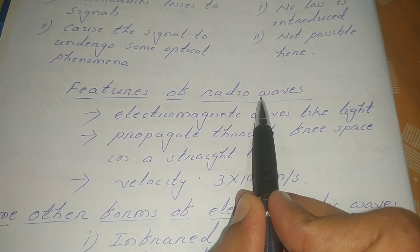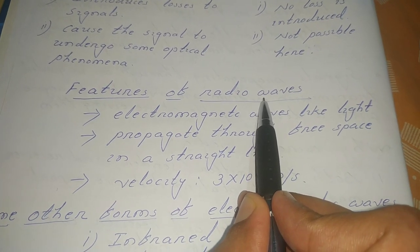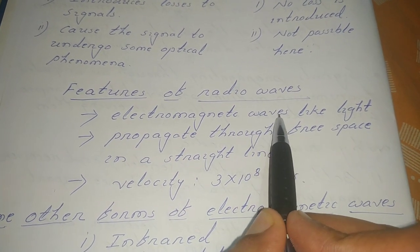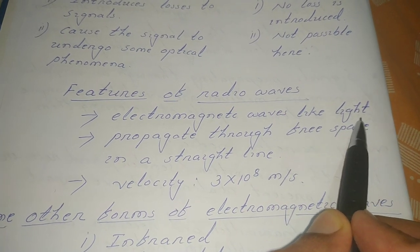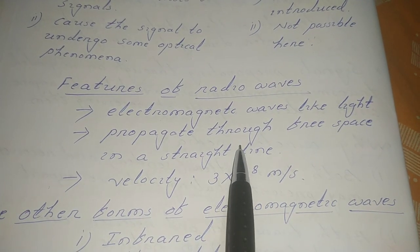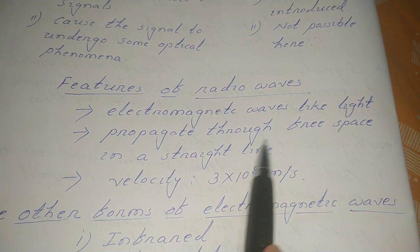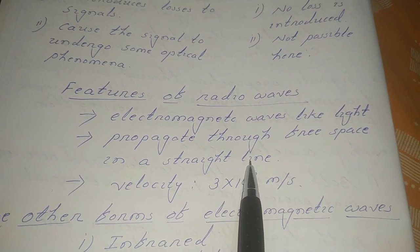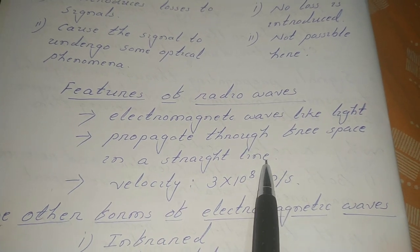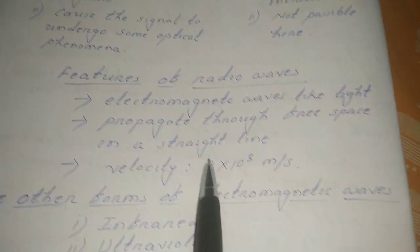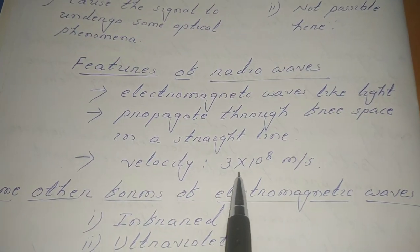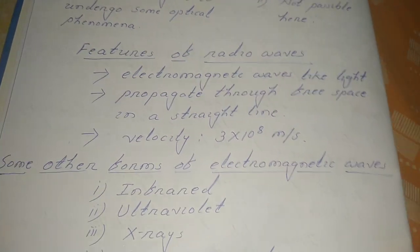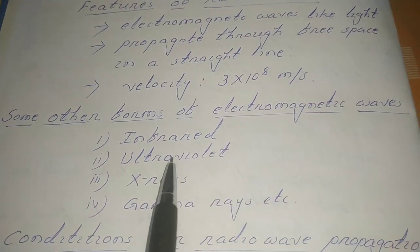Radio wave is a form of wireless media and is one type of electromagnetic wave, like light. Radio waves are transmitted or propagated through free space and move in a straight-line direction from the sender side to the receiver side. The velocity of a radio wave is 3 × 10⁸ meters per second.